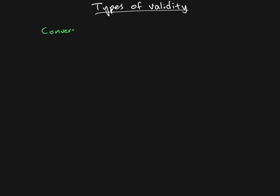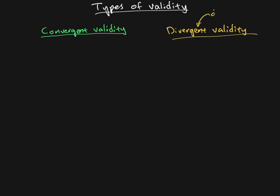I want to talk about two types of validity that are very closely related — in many ways, two sides of the same coin. Those are called convergent validity — convergent meaning something that converges — and divergent validity. This is also often called discriminant validity, discriminant meaning having to do with being able to discriminate between two different things.